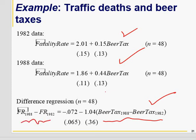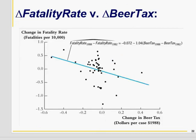That result makes sense. The analysis shows that the change in beer tax between the two time periods leads to a lowering of fatal accidents between those same periods. So a change in beer tax leads to a change in the fatality rate, as theory predicts.